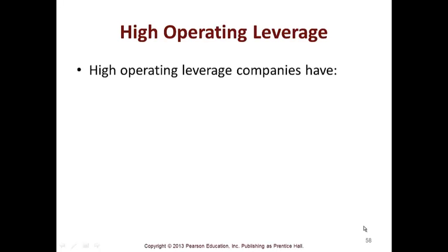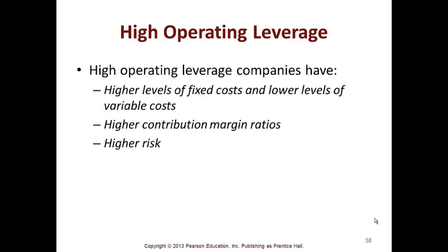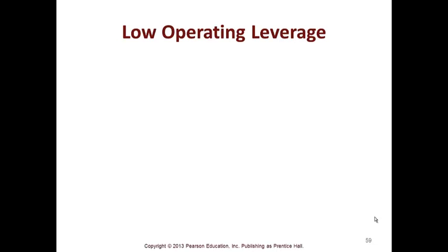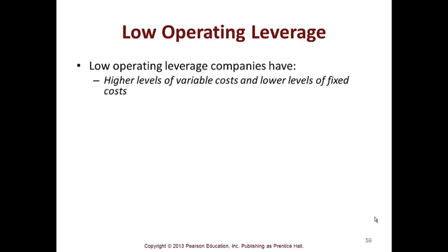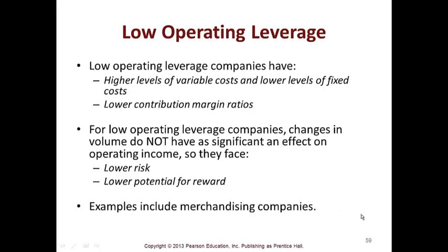Companies with high operating leverage have higher levels of fixed cost and lower levels of variable cost, giving higher potential for reward. Companies with low operating leverage have high levels of variable cost and low levels of fixed cost, resulting in a lower contribution margin. For low operating leverage companies, changes in volume do not have a significant effect on operating income, so they face lower risk and lower potential for reward. Examples include merchandising companies.